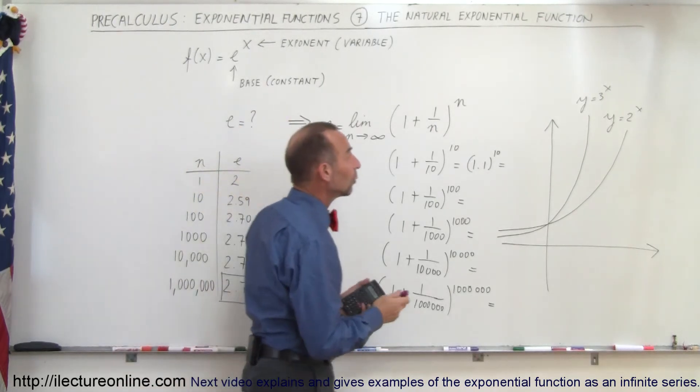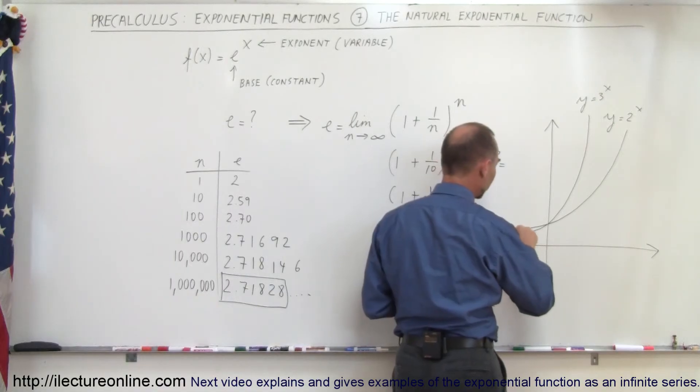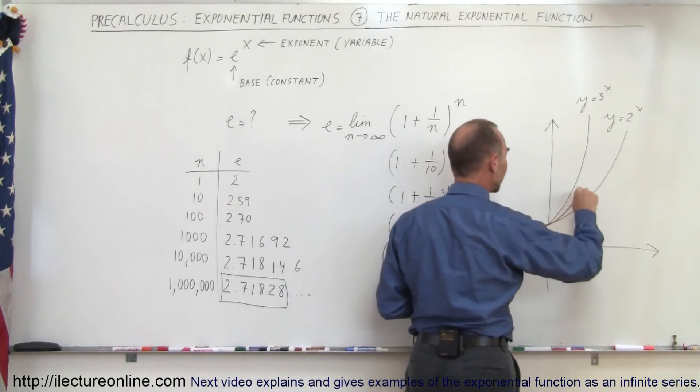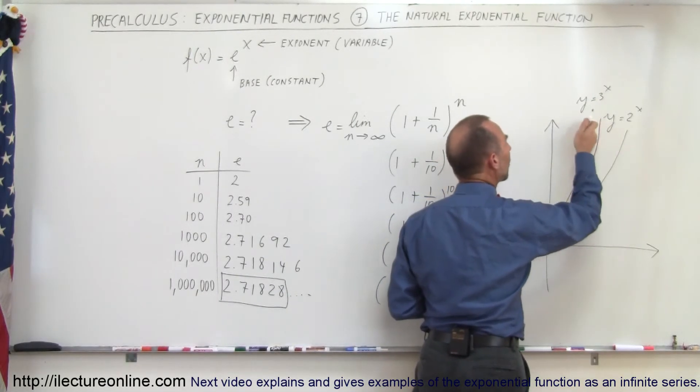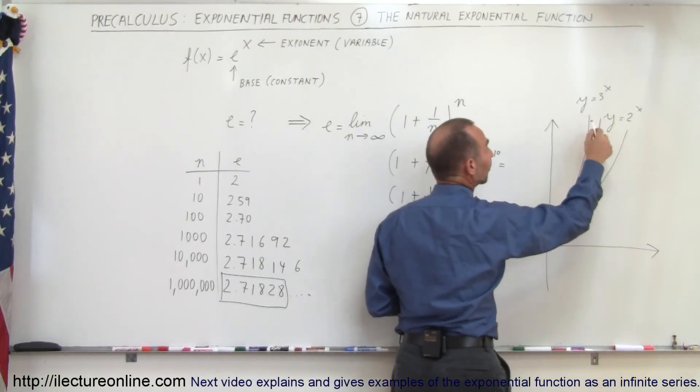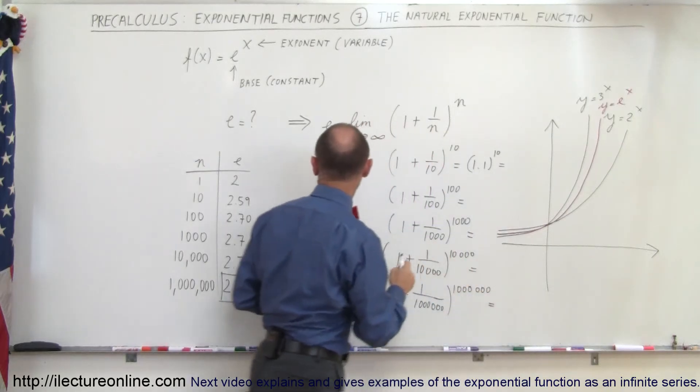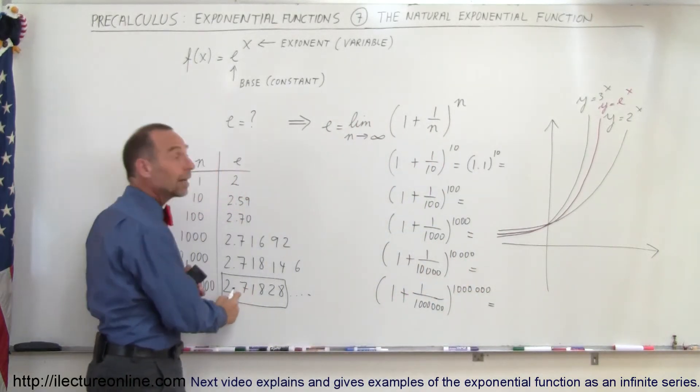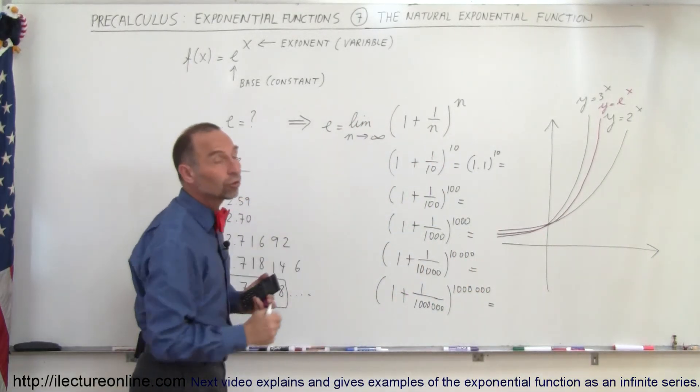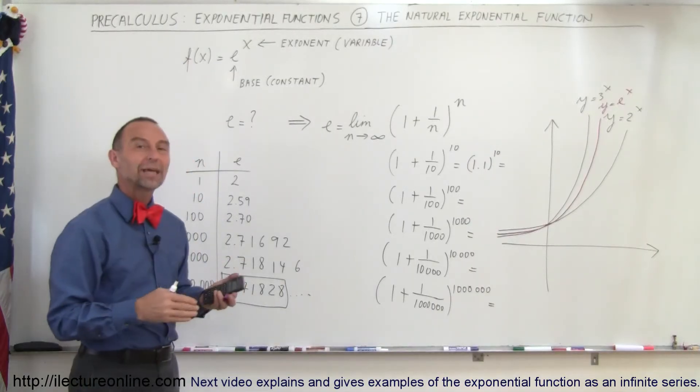You can then see that y equals e to the x would fall somewhere between those two values. So y equals e to the x would be a function that looks kind of like this. It would be closer to y equals 3 to the x because e is a number closer to 3 than it is to 2.